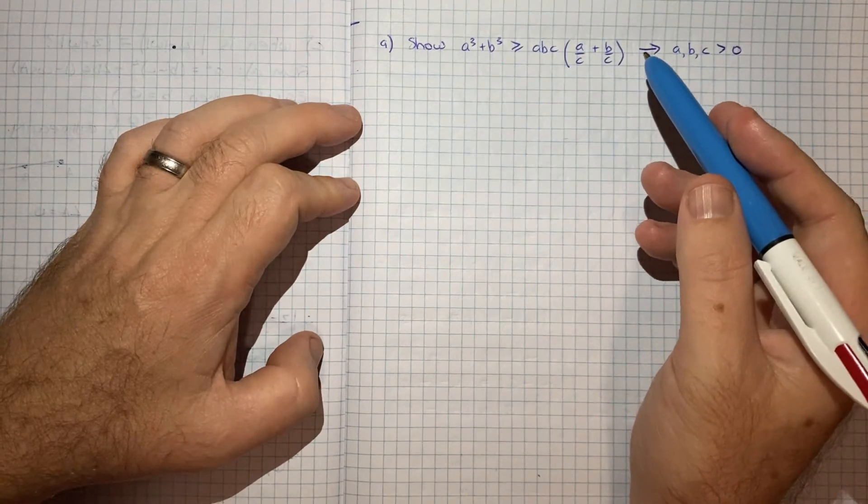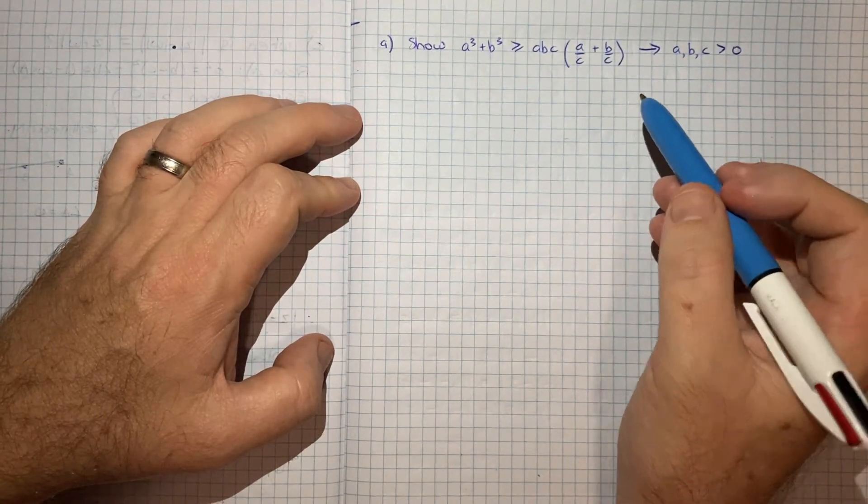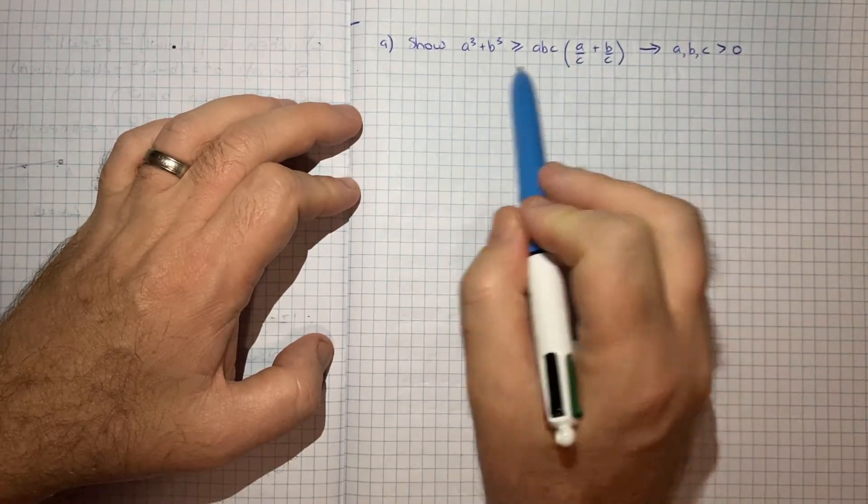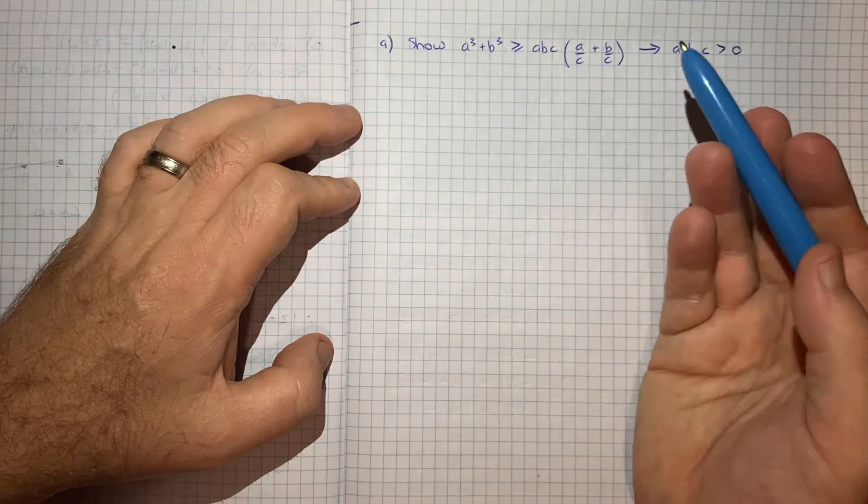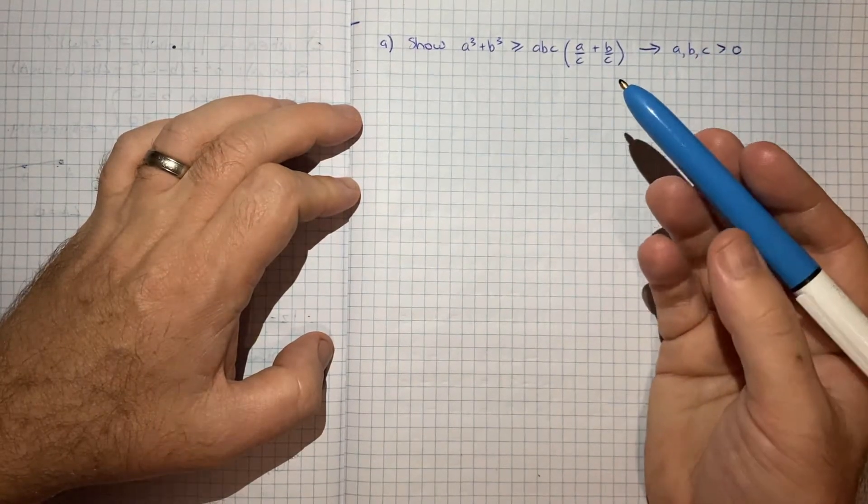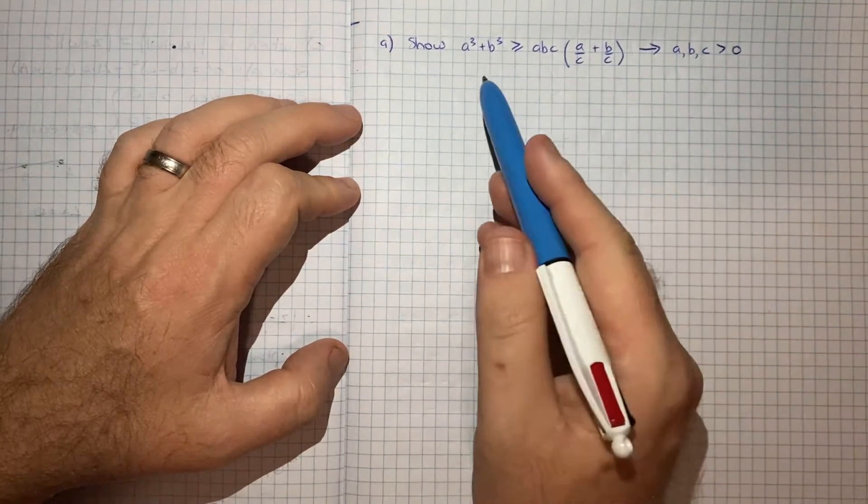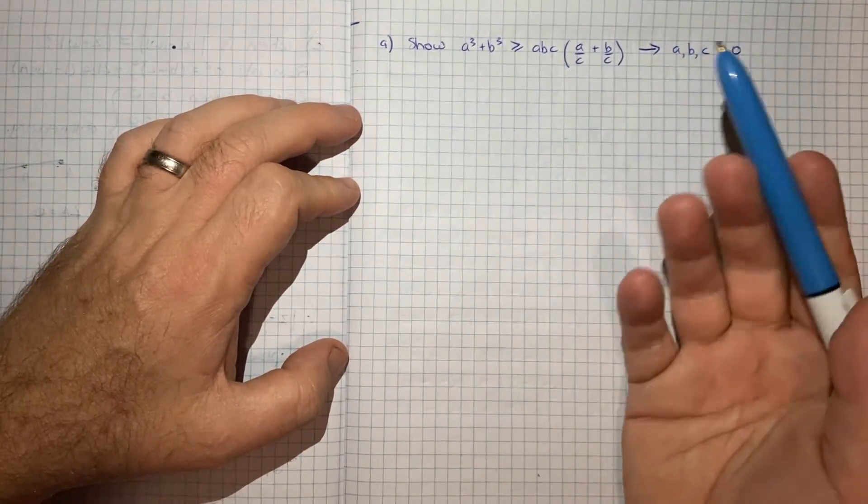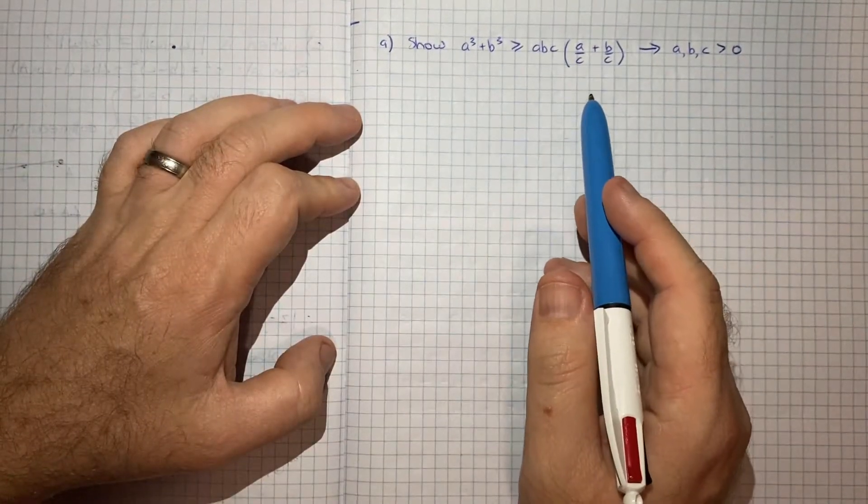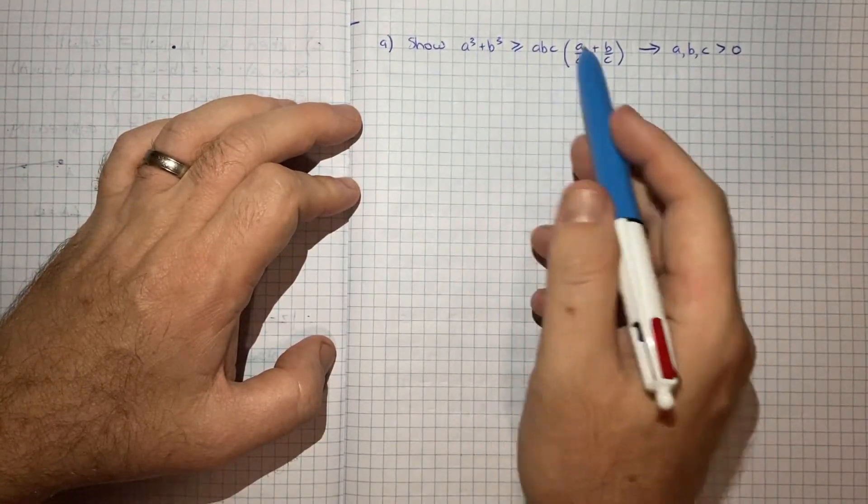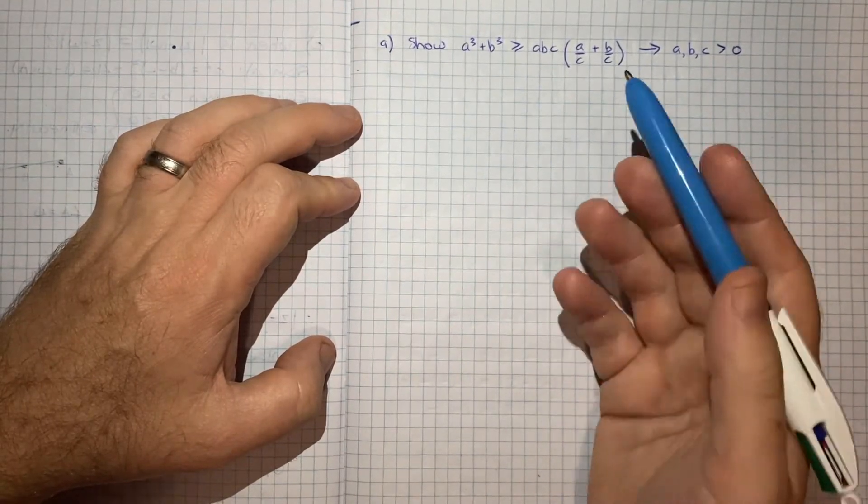It's kind of not necessarily the most mathematically robust thing to do, because you're kind of assuming that this result is true, when actually what we're trying to do is prove it. But from a test-taking perspective, if you were to see something like this on a test, maybe that's a handy technique, like somewhere separately from your working, just kind of start to play around with this and see if you end up with something that you know for sure.